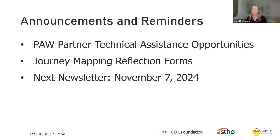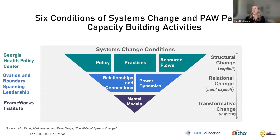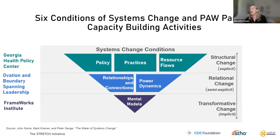Our next newsletter for the cohort is coming out November 7th, so please keep your eye out for that. I want to reference our six conditions of systems change model from FSG. In the past three months we have been working with Frameworks Institute, addressing mental models and looking at transformative change. Now we're moving up the model — these next three sessions are going to be exploring relational change: relationships and connections and power dynamics. With that, I will pass it over to Valerie Henderson for the next part.